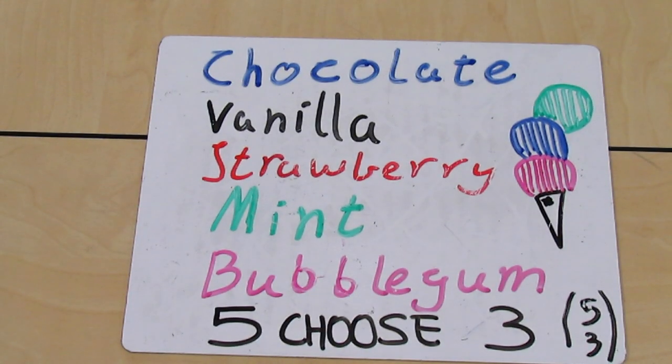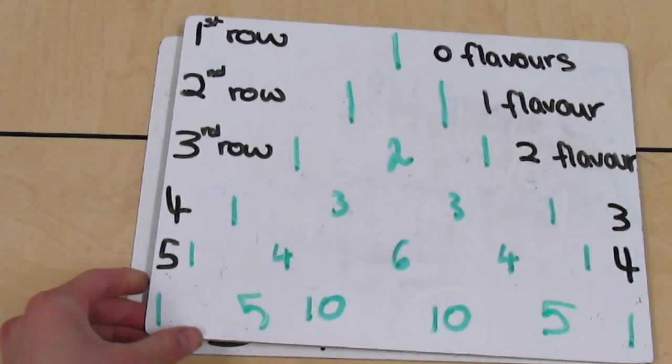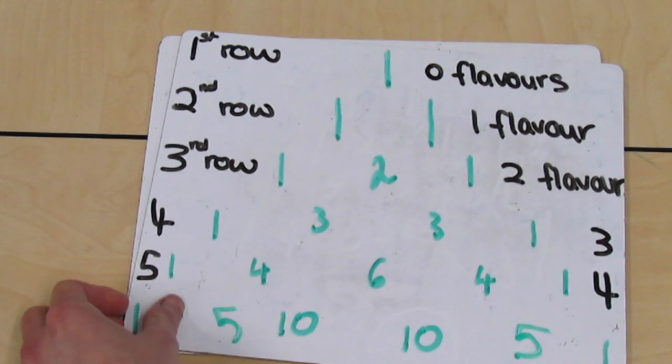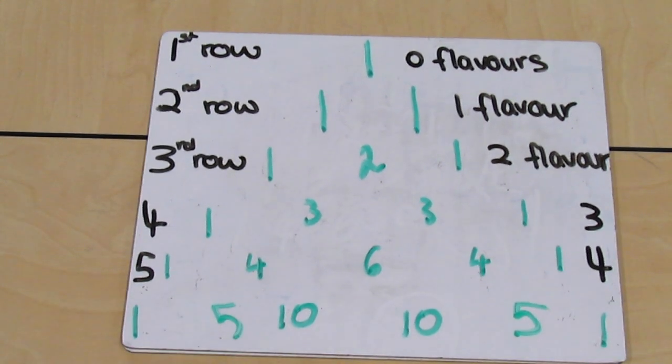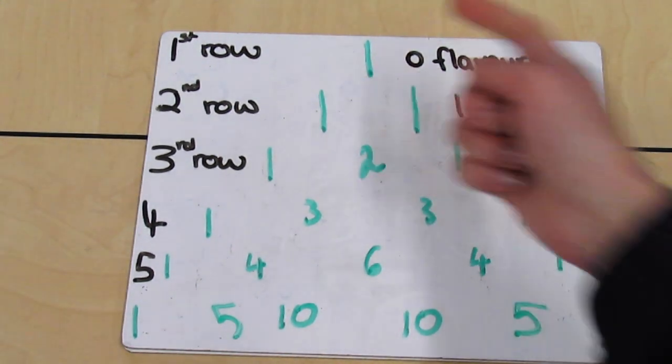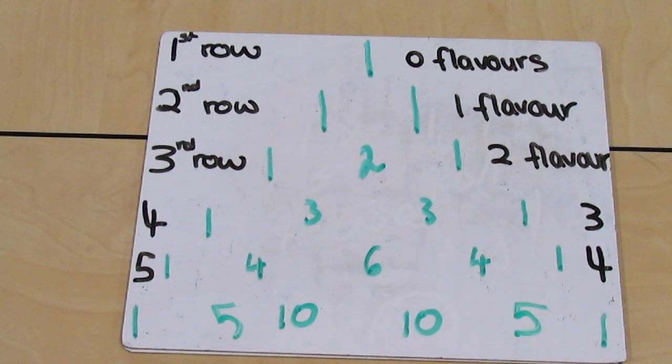Another way Pascal's Triangle can be used in real life is in combinatoric terms. For example, imagine you're given five flavors of ice cream. If we look at Pascal's Triangle, if you were given zero flavors of ice cream, there would only be one combination or one way of choosing zero, which is zero.